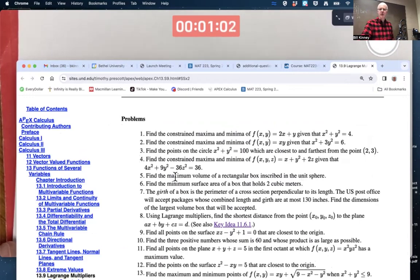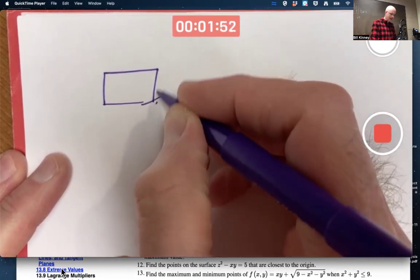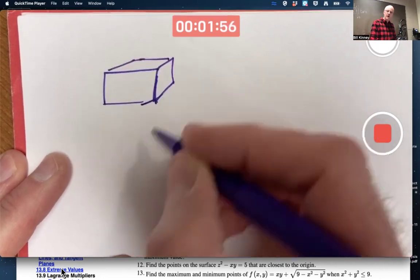So problem 5 says, find the maximum volume of a rectangular box inscribed in the unit sphere. You got a box, conceivably, not necessarily a cube.